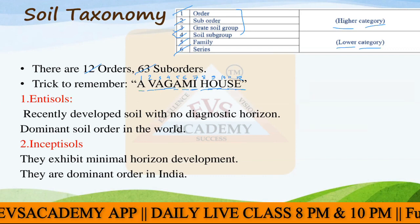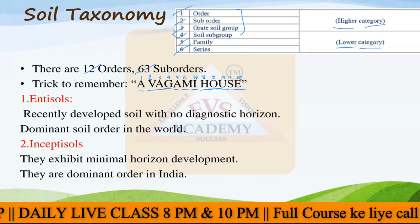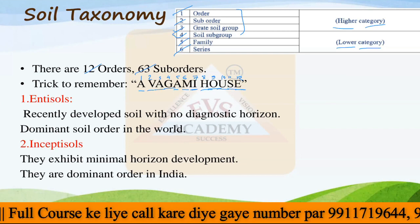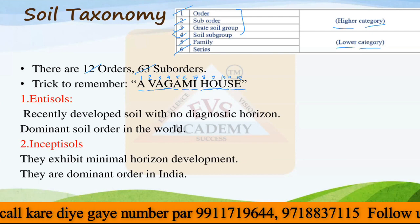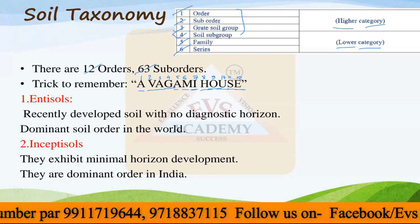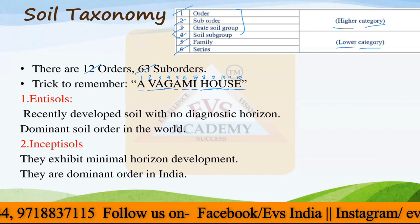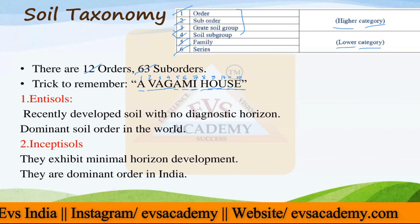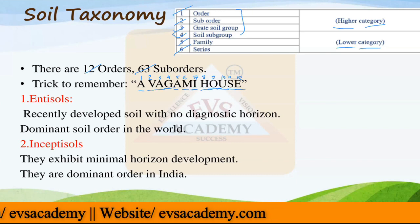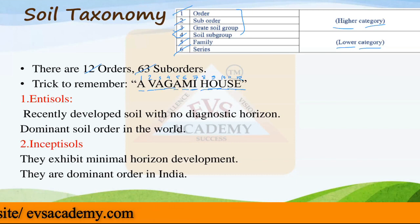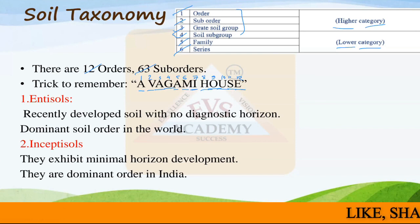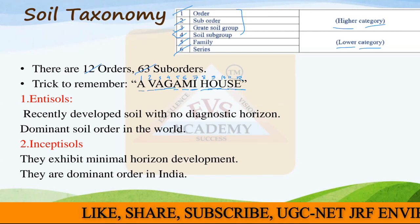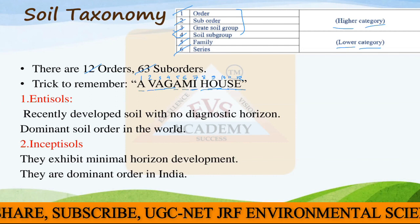The very first type of soil is Entisols. Entisols are also called as a zonal type of soil, which is an immature kind of soil - still in the maturing process, not fully developed. So Entisols are recently developed soil with no diagnostic horizon. Alluvial soil is also a type of Entisol because it is not fully developed yet and does not have any horizons. The dominant soil order in the world - the majority of soil you can find in the world - is a type of Entisol.